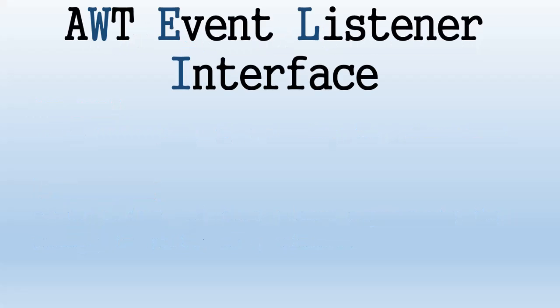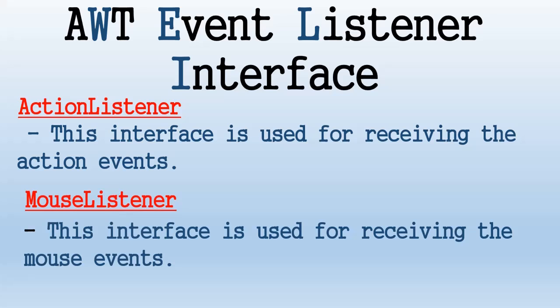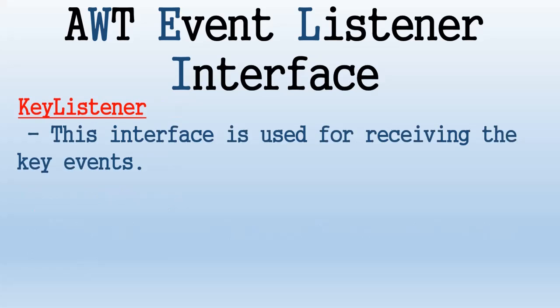Regarding Abstract Window Toolkit event listener interfaces: ActionListener is used for receiving action events and is responsible for handling events such as when the user clicks on a component like buttons, menus, and similar components. MouseListener is used for receiving mouse events when the user uses a mouse or similar device to interact with a component. KeyListener is used for receiving key events and gets notified when there is a change in key state — the states include typed, released, and pressed. This listener is very useful for monitoring keyboard activities.